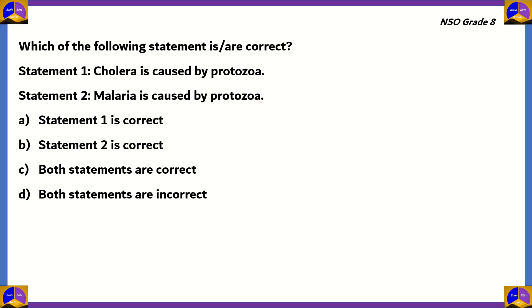Let's look at another question: Which of the following statements is or are correct? Statement one says cholera is caused by protozoa, and statement two says malaria is caused by protozoa. The options are: statement one is correct, statement two is correct, both statements are correct, or both statements are incorrect. We need to find out if the microorganism that causes cholera is in fact a protozoa.